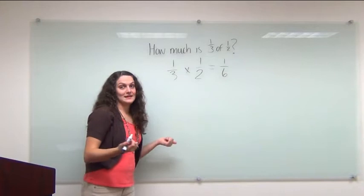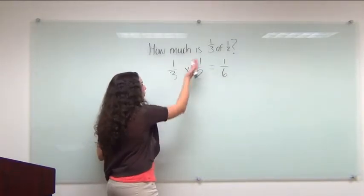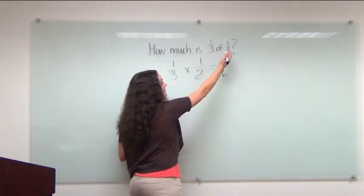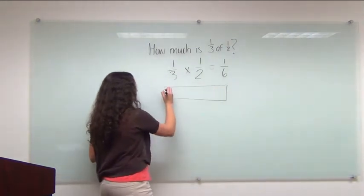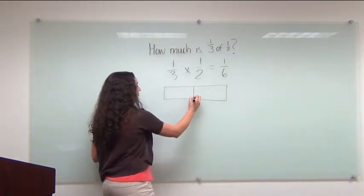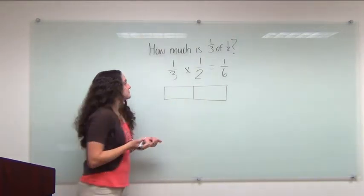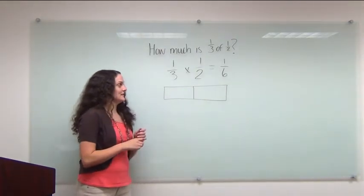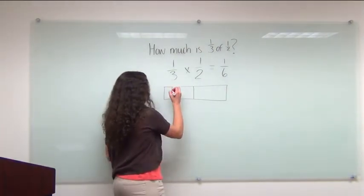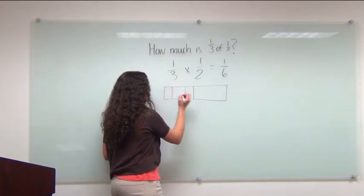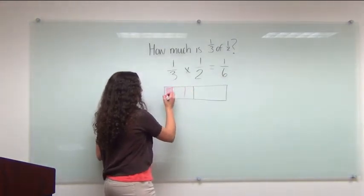If you think about it visually, it's asking one-third of one-half. So if I have a half, like this fraction, or this picture, I need a third of it. So that means I need to split this half into thirds, and I want one of those.